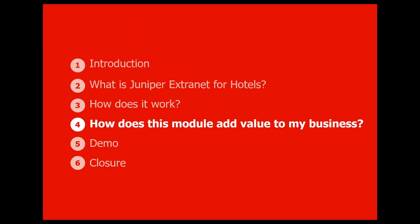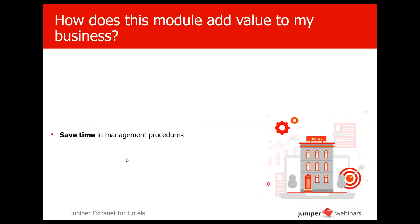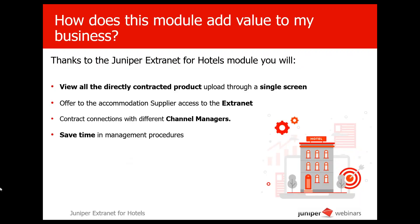How does this module add value to your business? Very simple. Thanks to the Uniper Extranet for Hotels, you will view all the directly contracted product uploaded through a single screen, thanks to the interaction of both modules — the Uniper Directly Contracted Accommodation and Uniper Extranet for Hotels. You can also offer the accommodation supplier access to the Extranet to configure different supplier contract parameters as well as manage received bookings. Contract accommodation with different channel managers and save time in management procedures, thanks to the connection with the channel managers and the accommodation supplier, so that you may invest time and effort in your business and not in product management — which makes this model very interesting.